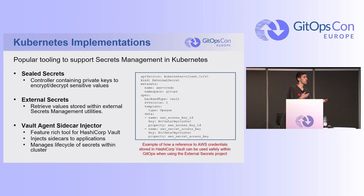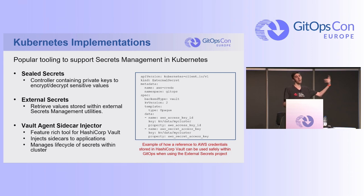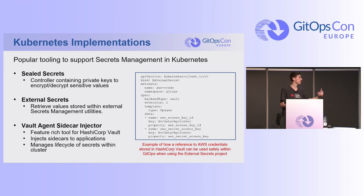A project I love is External Secrets. If you're using an external secrets management tool — a cloud provider secrets tool, HashiCorp Vault, you name it — this allows you to integrate a controller to grab, access, and manage those resources into Kubernetes. And then a third option widely being adopted is the Vault Secrets Agent Injector — a feature-rich plugin for HashiCorp Vault. It allows you to inject sidecars into deployments and pods, and manage the entire lifecycle of secrets within your Kubernetes cluster, periodically refreshing state automatically.